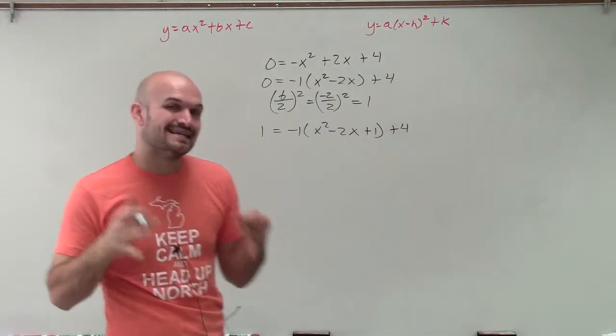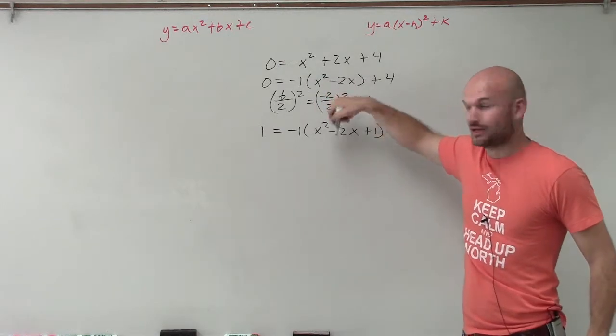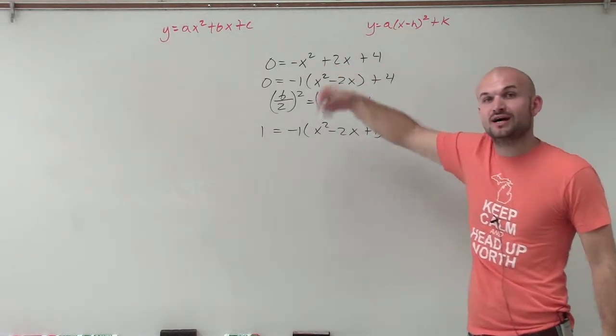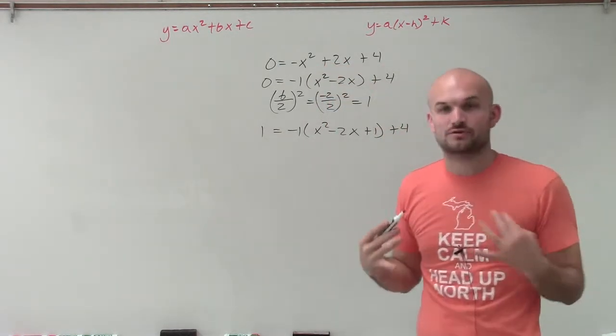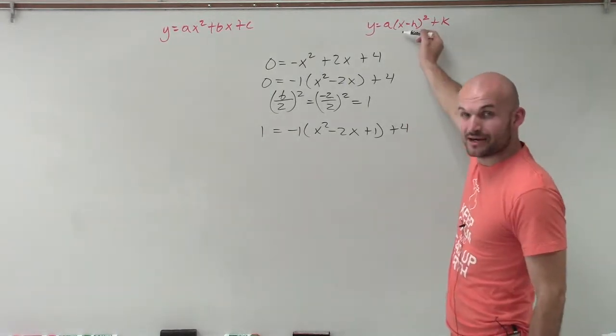Now, notice I'm adding it inside the parentheses because remember, that's what I want to do. I want to create a perfect square trinomial. And that's exactly what the b divided by 2 does is it creates a perfect square trinomial. And perfect square trinomials are awesome because now we can factor them to binomial squared.